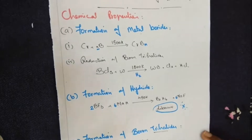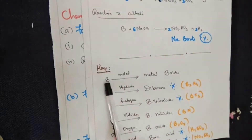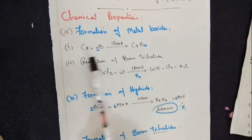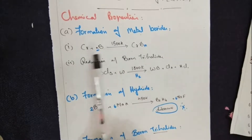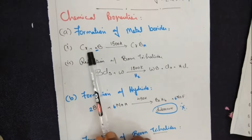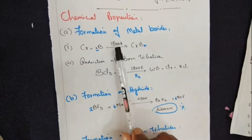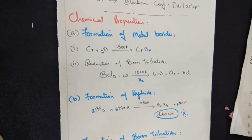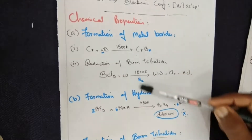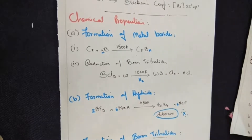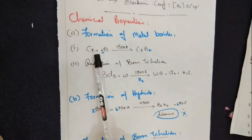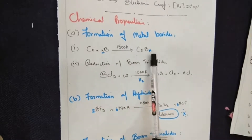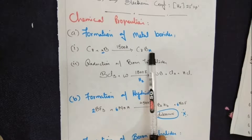Now let's move to the detailed reactions. Reaction number 1: formation of a metal boride. Here we treat boron with chromium. Boron is the smallest atom and requires very high temperature to break it, so almost every reaction requires high temperature. Boron treated with a metal gives a metal boride, where N stands for the number of molecules being taken.